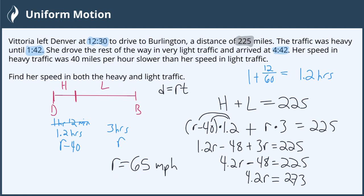So that's how fast we are going in the light traffic. How fast are we going in the heavy traffic? Well, in heavy traffic, we're going to subtract 40 because we're 40 miles per hour slower. So 65 minus 40 is 20 miles per hour. So those are our speeds in both types of traffic.